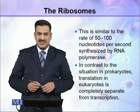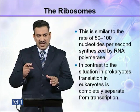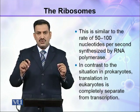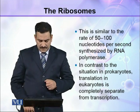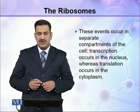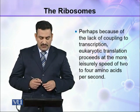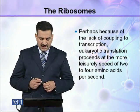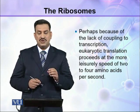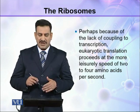In contrast to the situation in prokaryotes, translation in eukaryotes is completely separate from transcription, because in eukaryotes mRNA synthesis occurs in the nucleus while protein synthesis occurs in the cytoplasm. Therefore, these two processes cannot run simultaneously in eukaryotic cells; these events occur in separate compartments. Perhaps due to the lack of coupling to transcription, eukaryotic translation proceeds at the more leisurely speed of 2 to 4 amino acids per second, which is slower than in prokaryotes.